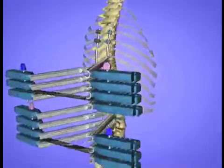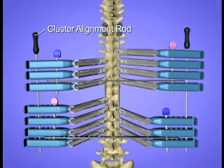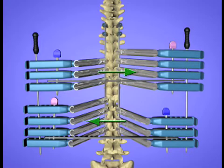With desired axial plane correction achieved, cluster alignment rods are added to hold the correction in place. Holding a slight overcorrection will account for elastic rebound in the construct when instruments are removed.